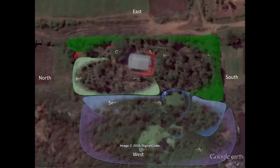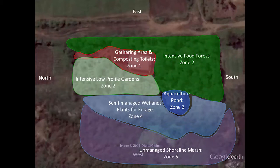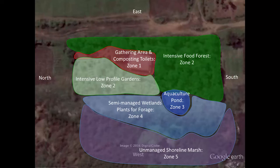The zonation for the site now makes a lot of sense. There's a shady zone 1 including the house, adjacent open areas, and a composting toilet facility away from the house. The zone 2 area consists of a multi-storied food forest laden with bananas, citrus, and a wide variety of tropical food plants. There's also a lower-growing food, herb, and medicine production garden to keep the site open to the breeze and views to the west.